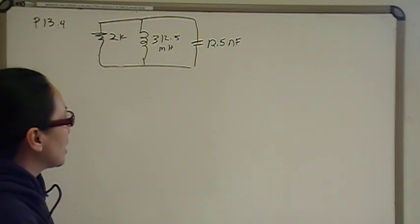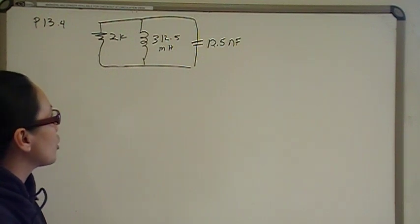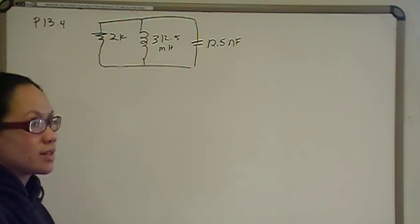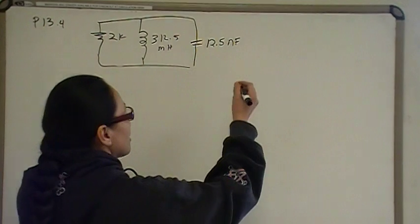So, we need to find the S domain impedance, and then poles and zeros of this circuit. So, let's get started.